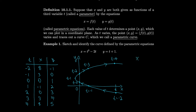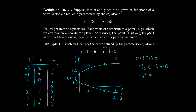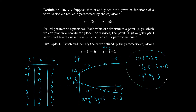Let's see if we can figure out the equation of the parabola. Looking at the x coordinate, x equals t squared minus 2t. But y equals t plus 1, so t equals y minus 1. Plugging that in, x equals y minus 1 squared minus 2 times y minus 1, which simplifies to y squared minus 4y plus 3. So this parabola is x equals y squared minus 4y plus 3. To identify curves defined by parametric equations, you can use tables, graphs, or try eliminating the parameter — though that's not always easy.